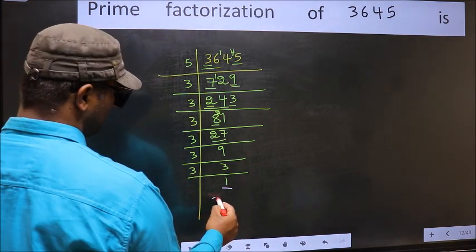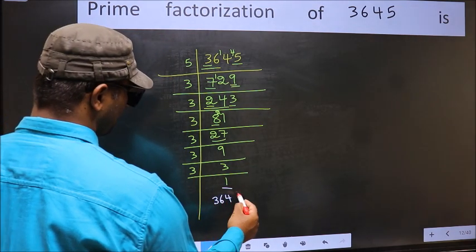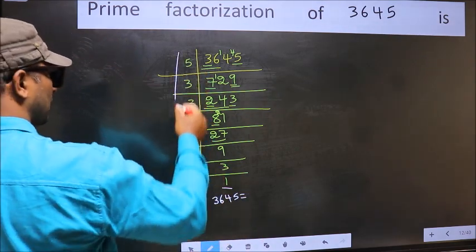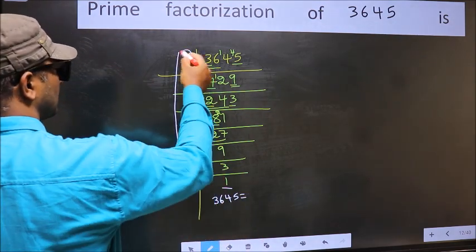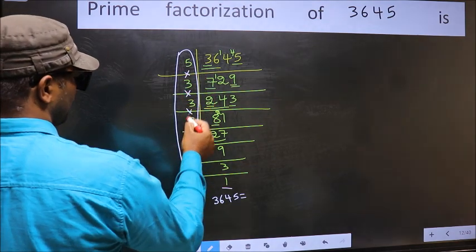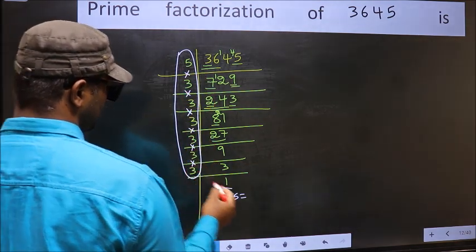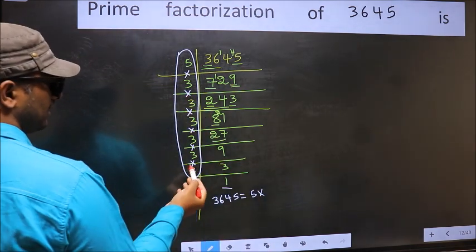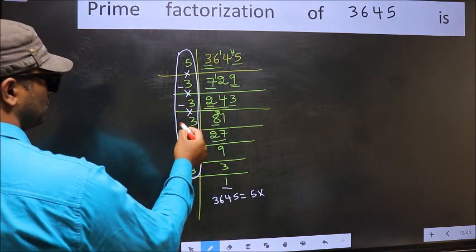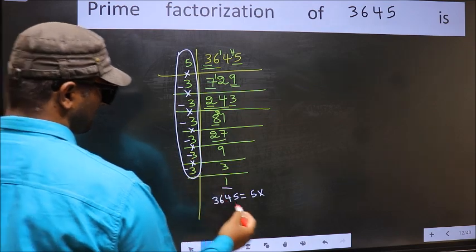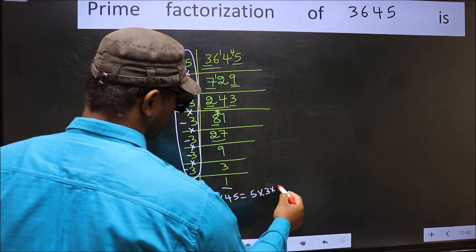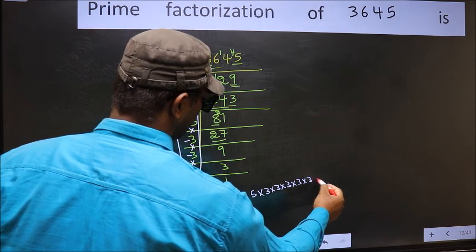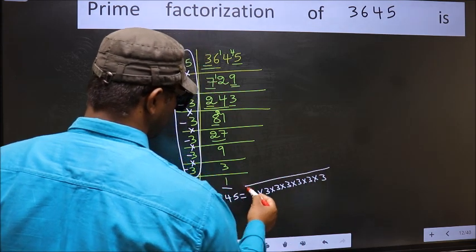So the prime factorization of 3645 is the product of these numbers. That is 5 into 3 into 3 into 3 into 3 into 3 into 3. How many times did we get 3? 1, 2, 3, 4, 5, 6 — so 3 to the power 6, multiplied by 5. This is the prime factorization of 3645.